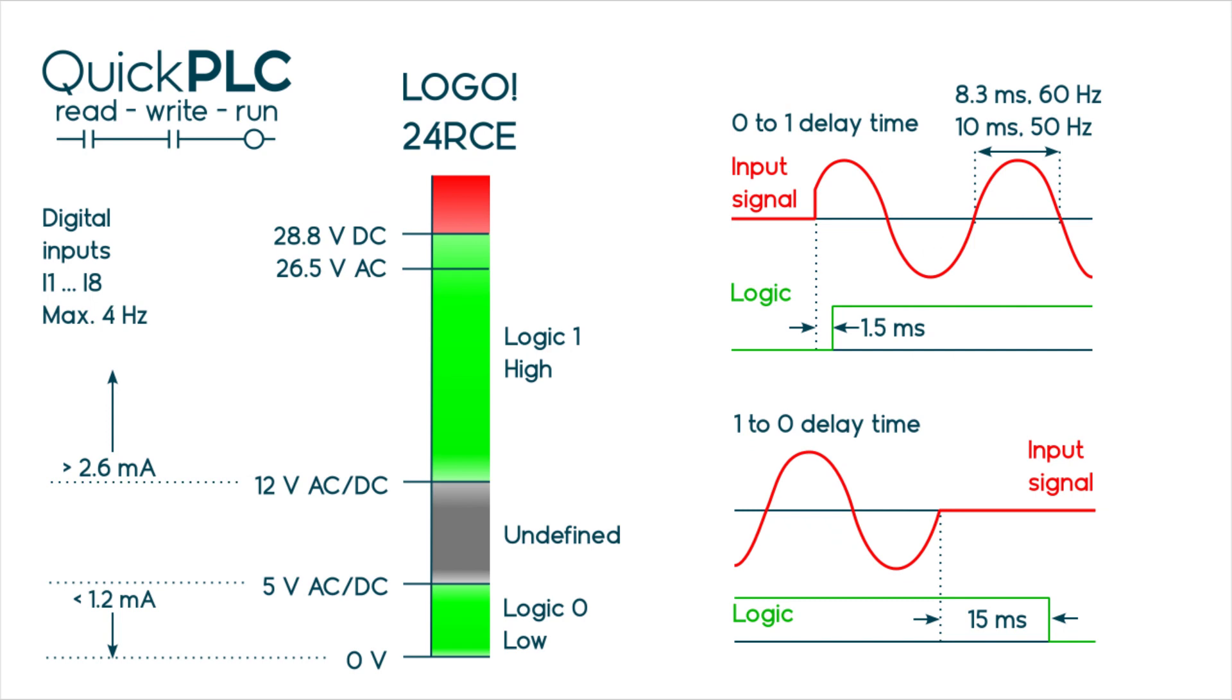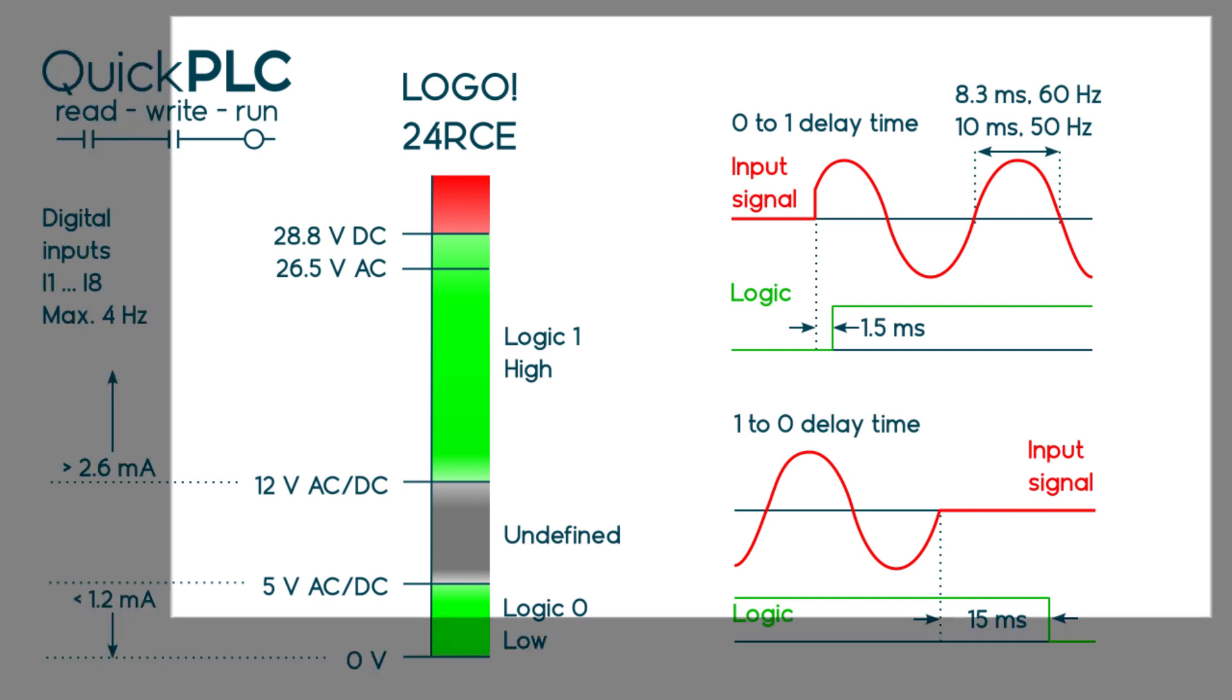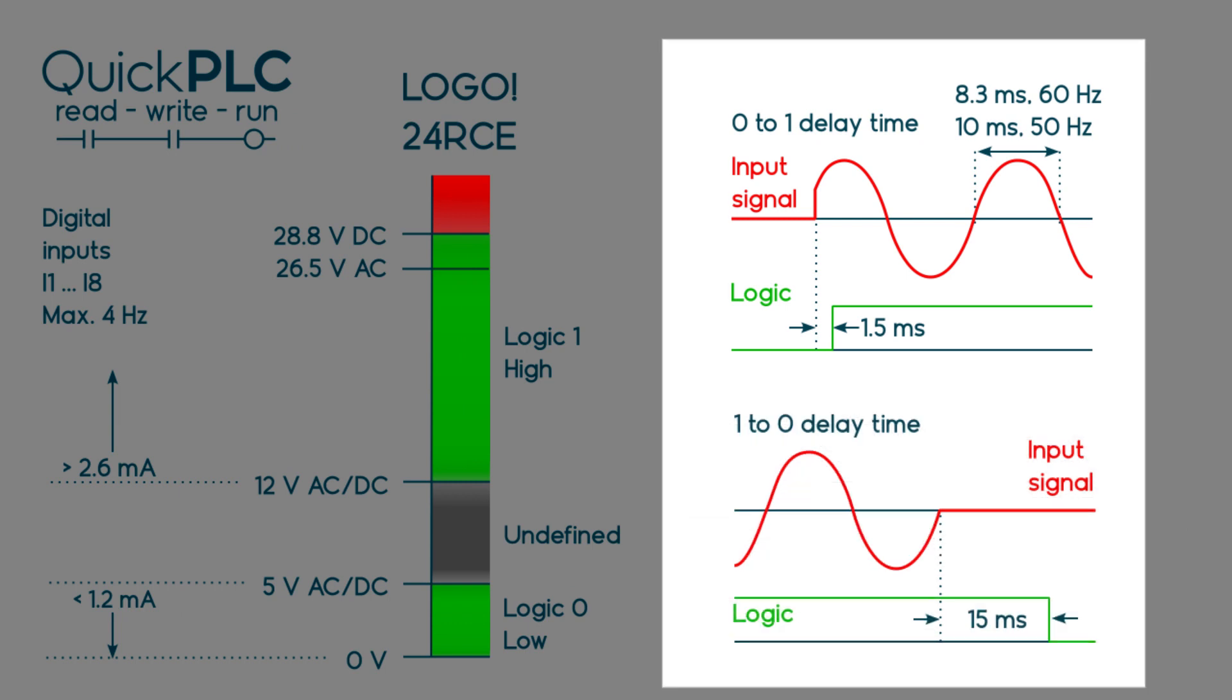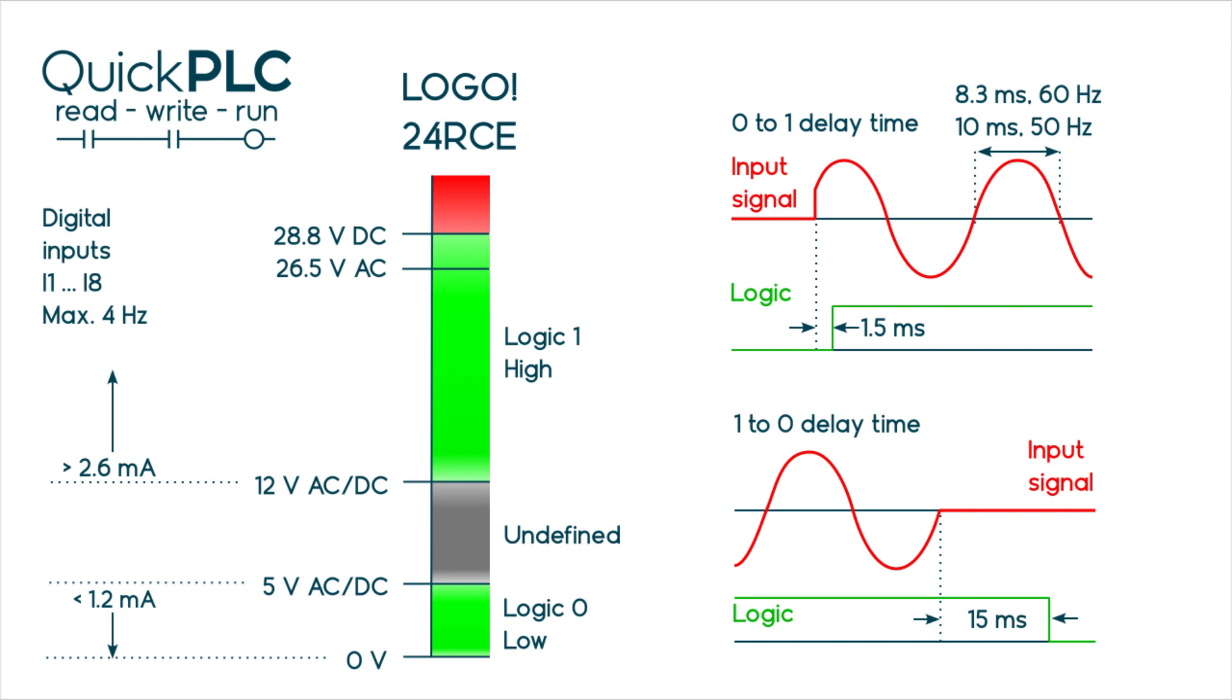The main thing to note are the input response times. There will be a rectifier and capacitor filter on the input to hold the logic level during the zero cross. The turn on is fairly quick at 1.5 milliseconds but turn off is about 1.5 mains half cycles at 50 hertz. 24 volt AC is frequently found in air conditioning systems.